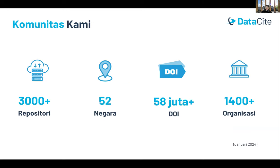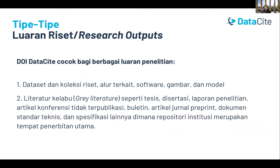Hingga saat ini, DataCite sudah memfasilitasi lebih dari 3.000 repository di 52 negara dan memproduksi 52 juta DOI yang dikelola oleh lebih dari 1.400 organisasi. DOI yang diproduksi DataCite digunakan untuk semua luaran riset — baik dataset dan koleksi riset yang beragam seperti software, gambar, atau model — tetapi juga grey literature yang umumnya dikelola oleh perpustakaan khusus suatu instansi yang memiliki repository tersendiri.